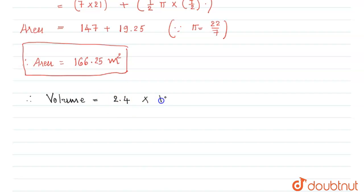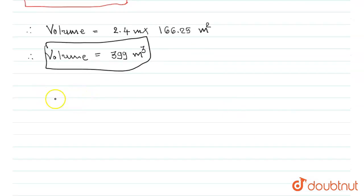This is equal to 166.25 meters squared times 2.4 meters, so that we have 399 meter cube. So the volume we got in meter cube but we require it in gallons, so therefore